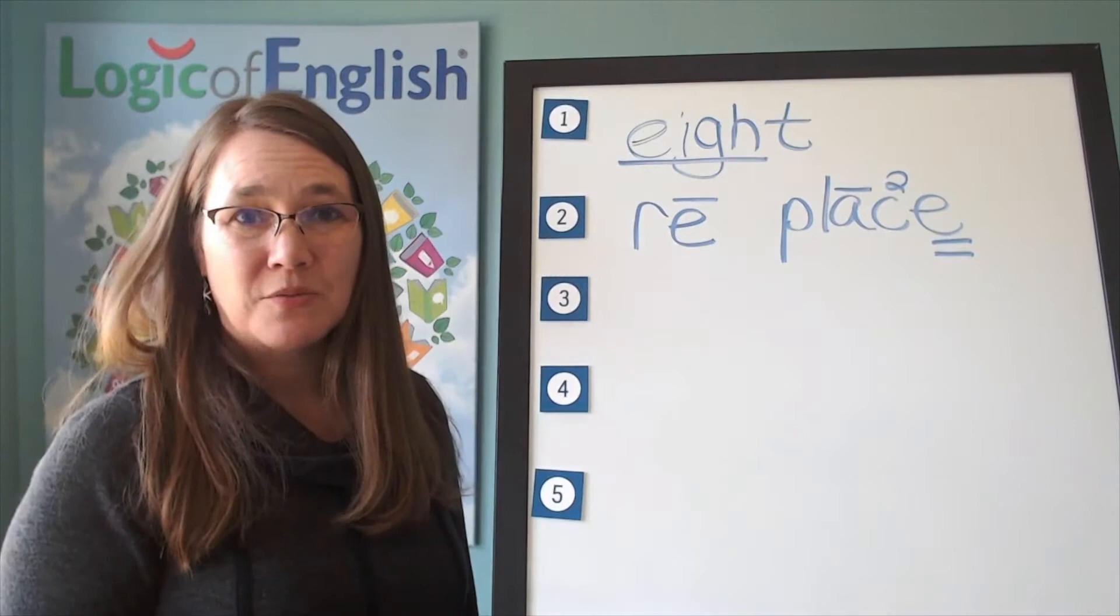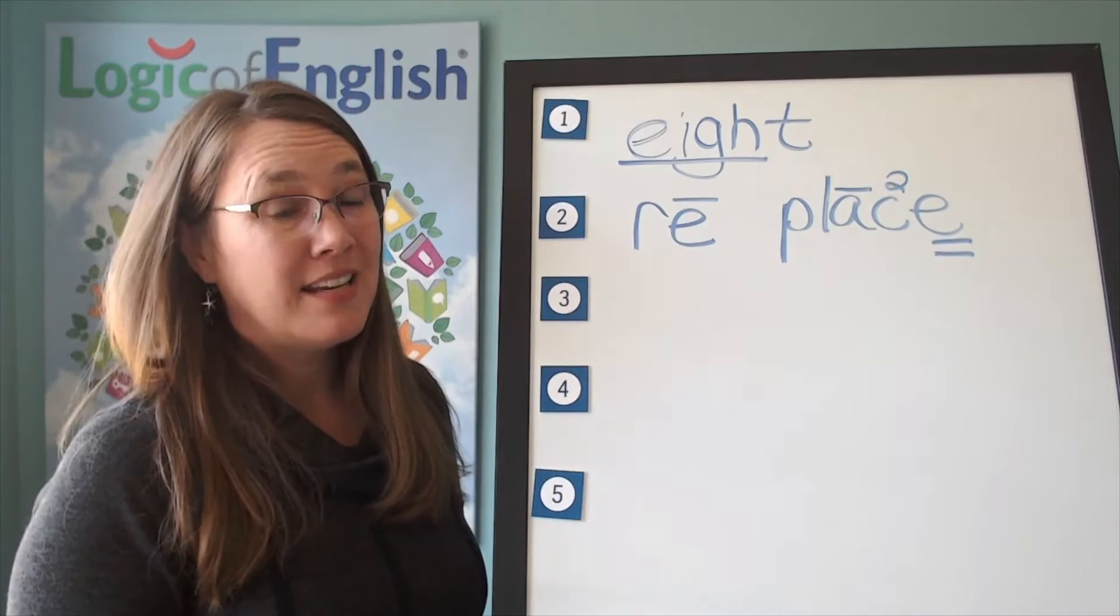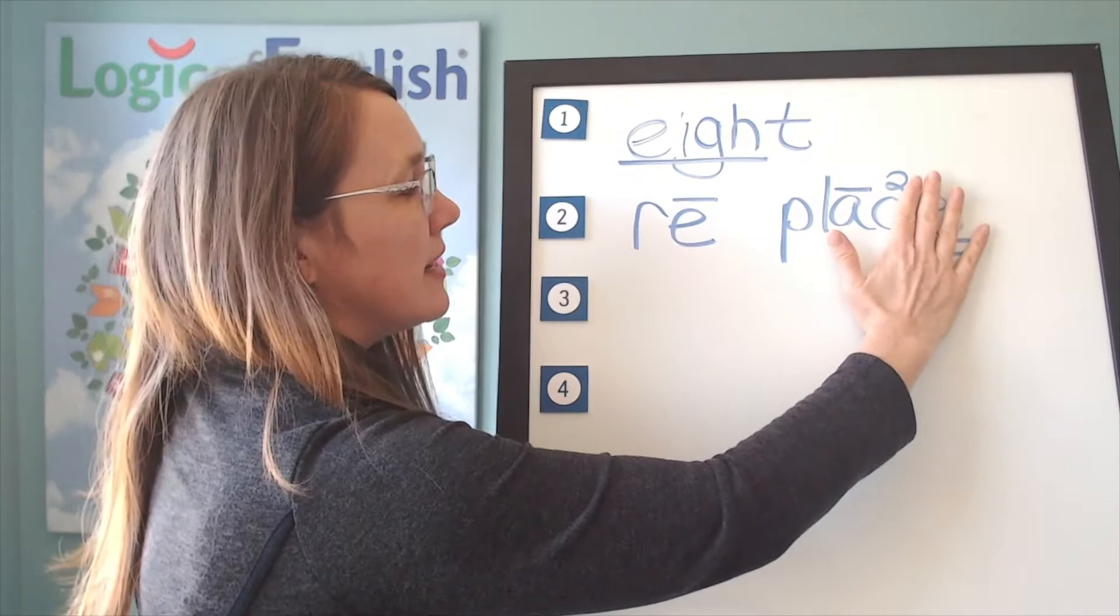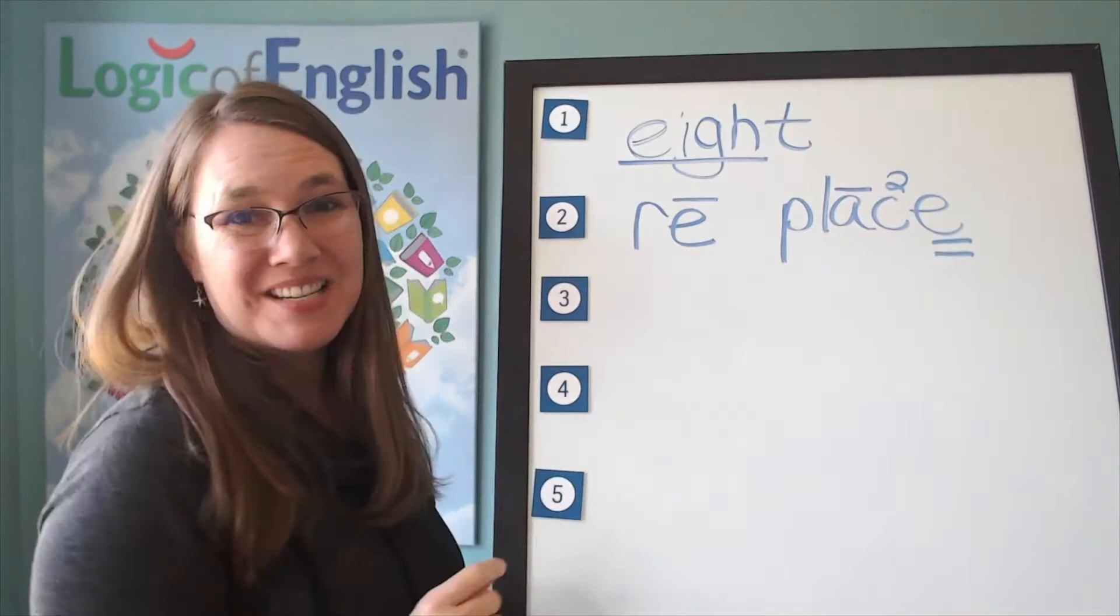Why do we have a silent final E in replace? You're right. The vowel says its long sound because of the E. And it's there for a second reason. Do you see it? It makes the C soften to S. The C says S because of the E. Without it, it would say re-plac. But with it, it says replace. All right. Good job.